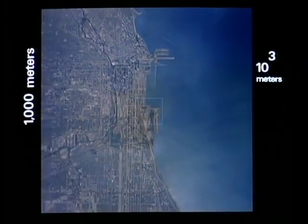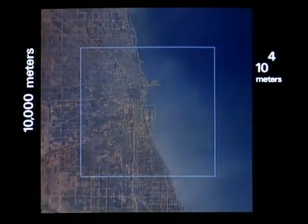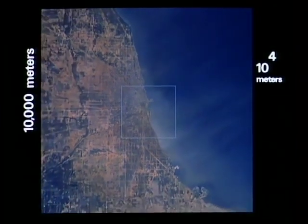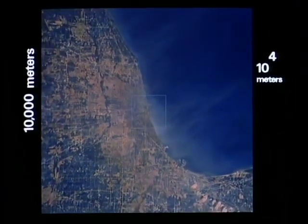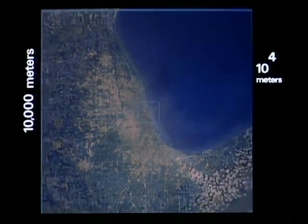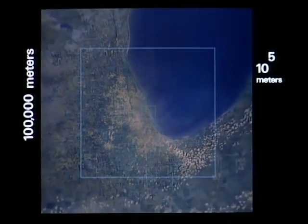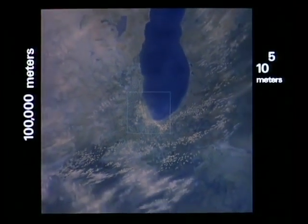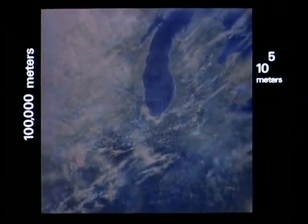We see the great city on the lake shore. 10 to the 4th meters, 10 kilometers, the distance a supersonic airplane can travel in 10 seconds. We see first the rounded end of Lake Michigan, then the whole great lake. 10 to the 5th meters, the distance an orbiting satellite covers in 10 seconds.